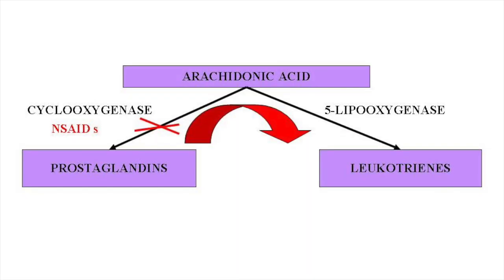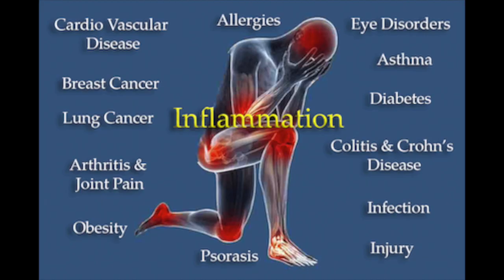The mode of action of flubiprofen involves the non-selective binding to cyclooxygenase and its inhibition. This results in a reduction of arachidonic acid conversion into prostaglandins that is involved in the regulation of pain, inflammation and fever.